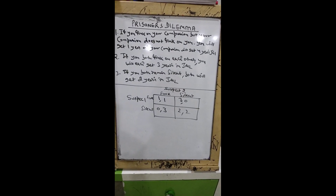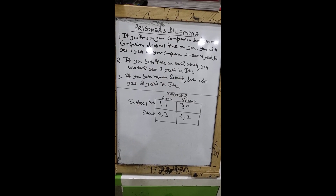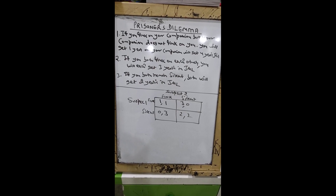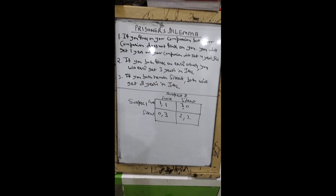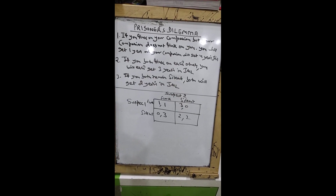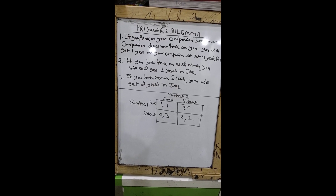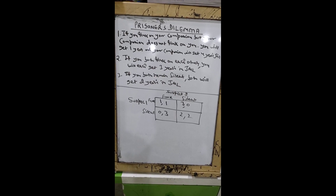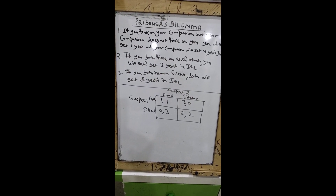This is called a payoff matrix and usually it is expressed in positive terms. The maximum imprisonment is four years. There are two strategies available to both players: either they think or they remain silent. If they both think on each other, they were getting three years jail, whereas the maximum is four years, so one year of freedom each. If one thinks and the other remains silent, the guy who thinks gets three years of freedom whereas the other gets zero. If they both remain silent, they both get two years in jail, so two years of freedom each.